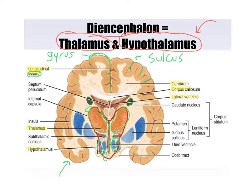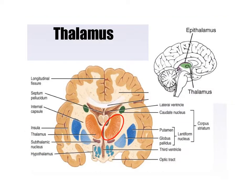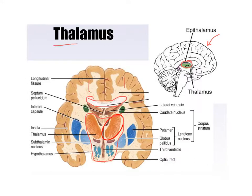Gyrus, or gyri for plural. In basically the same image, you can see the diencephalon right down here — thalamus, hypothalamus — can't see the pituitary gland, also can't see the pineal gland. Here's the corpus callosum, which is the bridge between the left and the right hemispheres of the brain. Over here we have a sagittal view — here's the thalamus, that's what we're going over now.